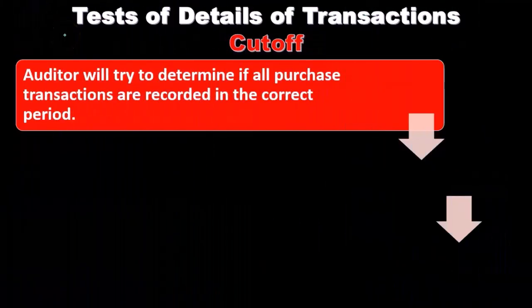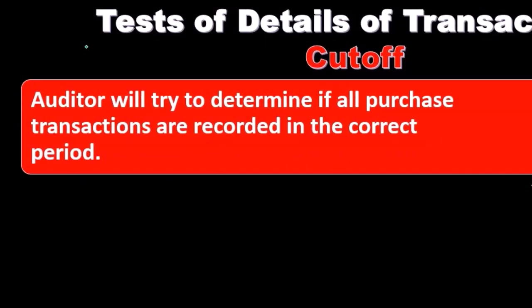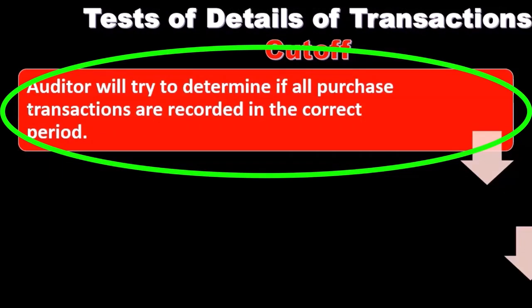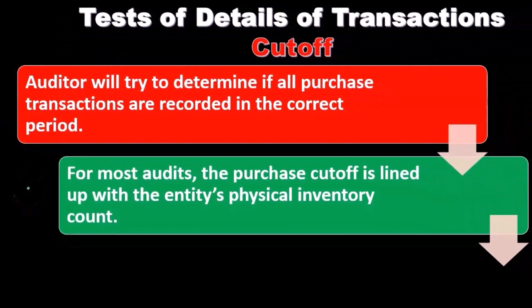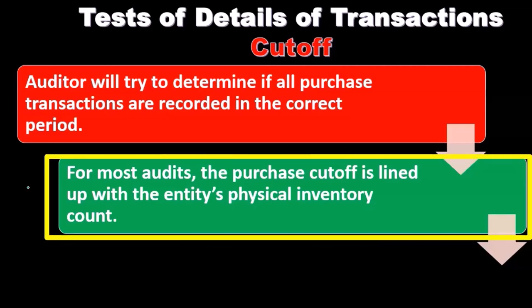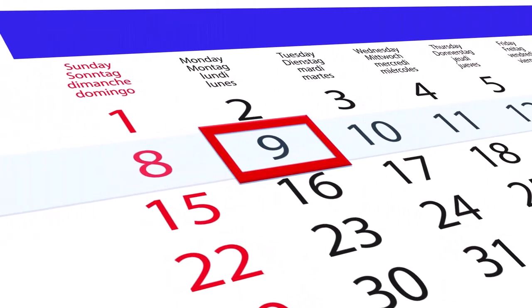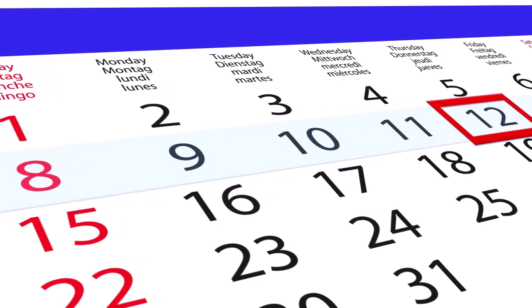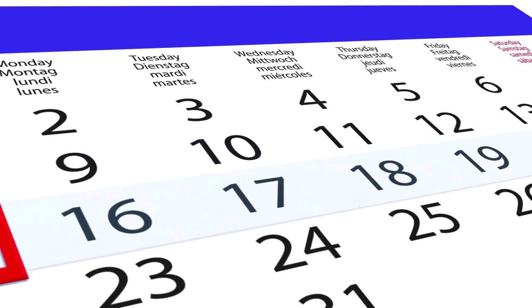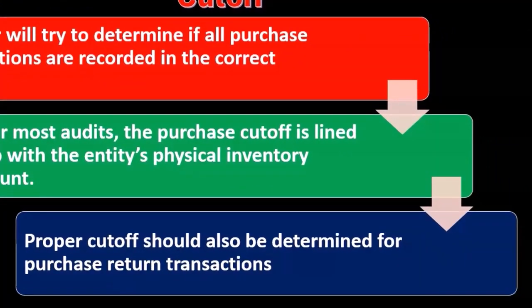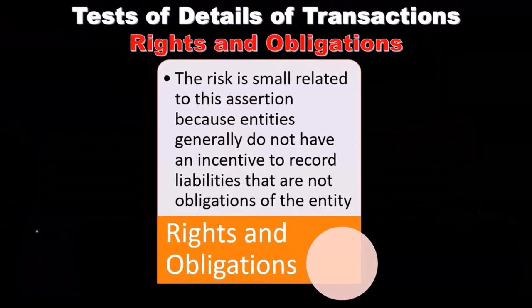Next is the assertion of cutoff, which concerns whether things are properly recorded in the correct time period. The auditor will try to determine if all purchase transactions are recorded in the correct period. For most audits, the purchase cutoff lines up with the entity's physical inventory count, which typically occurs near year end. Proper cutoff should also be determined for purchase return transactions.